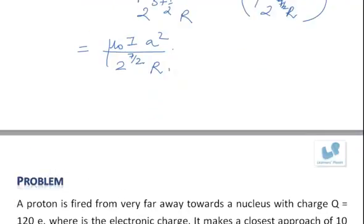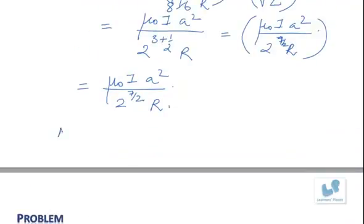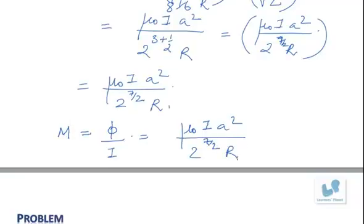So if you find out the mutual inductance which is given by linked flux φ divided by current I, so we will get the value of mutual inductance as μ₀a² upon 2 to the power 7/2 times R. So the value of P is 7. This is the correct answer.